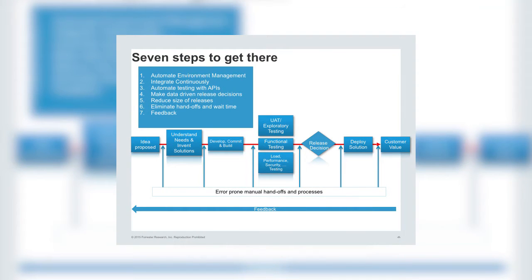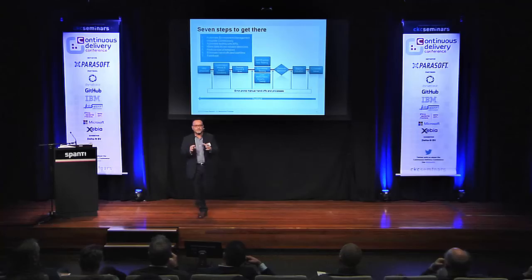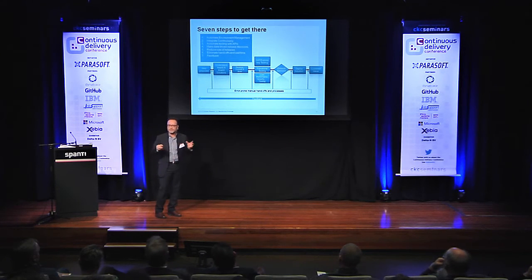The fourth point is: make data-driven release decisions. We're exploding with analytics and data, and we've got lots of data within the development and delivery process. All the tools generate data and metadata. We're starting to see more use of analytic tools and even machine learning algorithms that can make intelligent correlations and pull out interesting information — helping us decide what to test next, what to release, and whether a candidate is ready to deploy given all the tests that passed and the data produced.